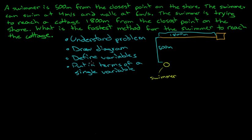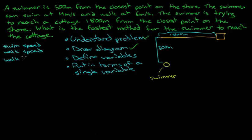So we need to define variables. We've understood the problem, we've drawn a diagram — let's define the variables in terms of a single variable to make this a bit easier. We know the swim speed is 4 meters a second, and the walking speed is 6 meters per second. And we need the walking distance and the swim distance.